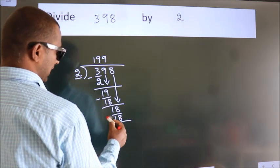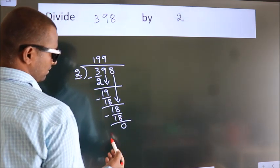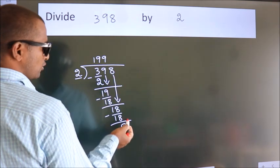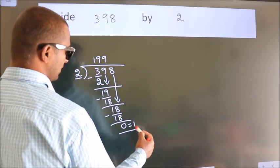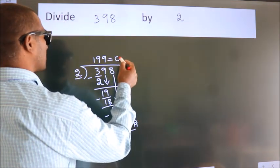Now, we subtract. We get 0. No more numbers to bring it down. So, we stop here. This is our remainder. This is our quotient.